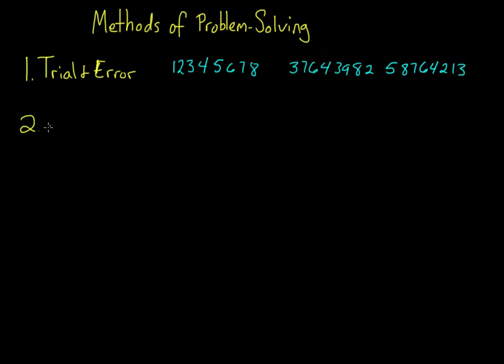A more methodical approach would be to use the algorithm strategy. An algorithm is a logical, step-by-step procedure of trying solutions until you hit on the right one. So if we're still trying to get into our email account, we might start with 1-2-3-4-5-6-7-8. If that doesn't work, we'll change one number at a time. 2-2-3-4-5-6-7-8, then 3-2-3-4-5-6-7-8, and so on.